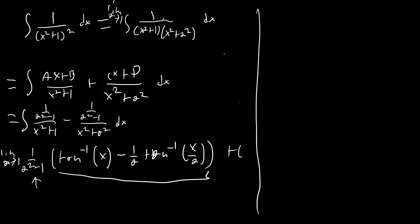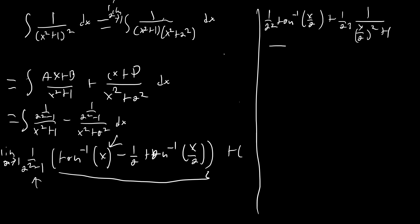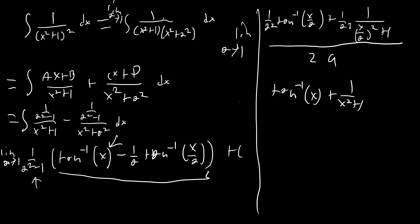All we have to do is differentiate with respect to a on the top and bottom — L'Hôpital's rule. The first term disappears and we end up with 1/a² · arctan(x/a) plus 1/a³ · 1/((x/a)² + 1), all over the derivative of a² − 1 which is 2a. Taking the limit as a → 1, we can plug in a = 1 and we get arctan(x) plus 1/(x² + 1) — don't forget the chain rule from x/a — plus x/(x² + 1), all over 2, plus C.